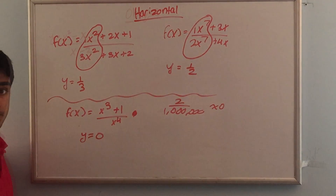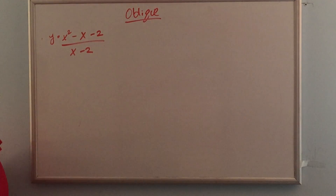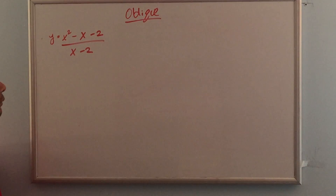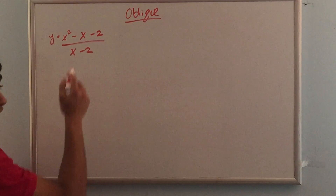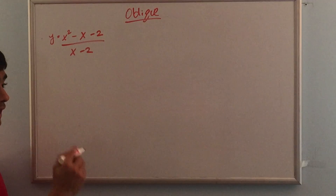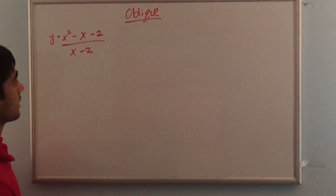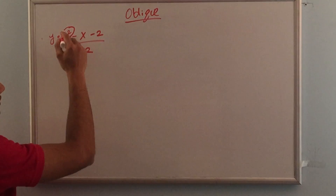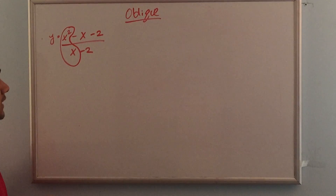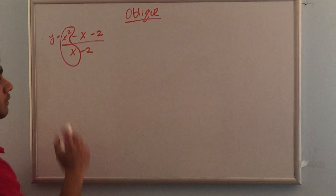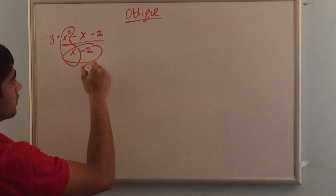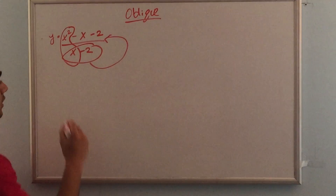The oblique asymptote is a little more complicated than the horizontal or vertical asymptote. You use the oblique asymptote when the highest power variable in the numerator is greater than the highest power variable in the denominator. For example, y = (x² − x − 2) / (x − 2): here x² in the numerator is greater than x in the denominator, so we can't use the horizontal asymptote rule and must do the oblique asymptote calculation, which requires dividing the denominator into the numerator.